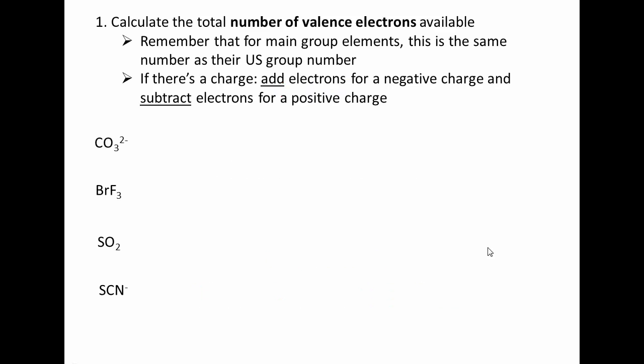Step 1. First thing you need to do is calculate the number of valence electrons that are available in your structure. Remember that for your main group elements, this is the same number as their US group number on the periodic table. If there is a charge, you need to take that into consideration. So you need to add electrons if you have a negative charge. That means electrons have been added to the structure. And if you have a positive charge, you need to subtract electrons because electrons have been taken away. Let's look at how this is done.